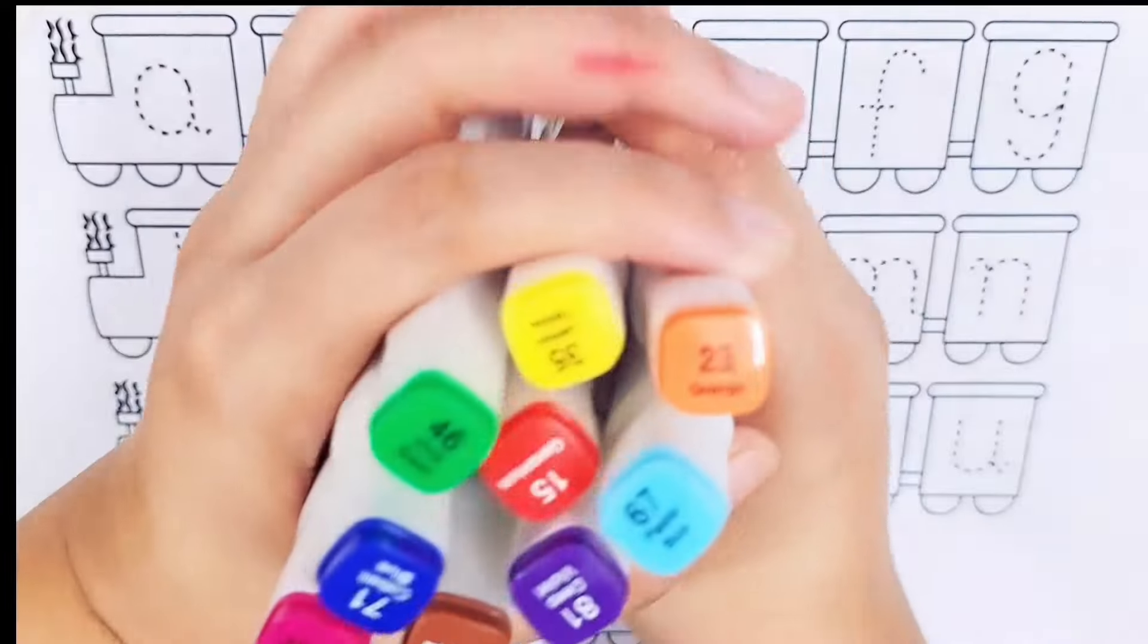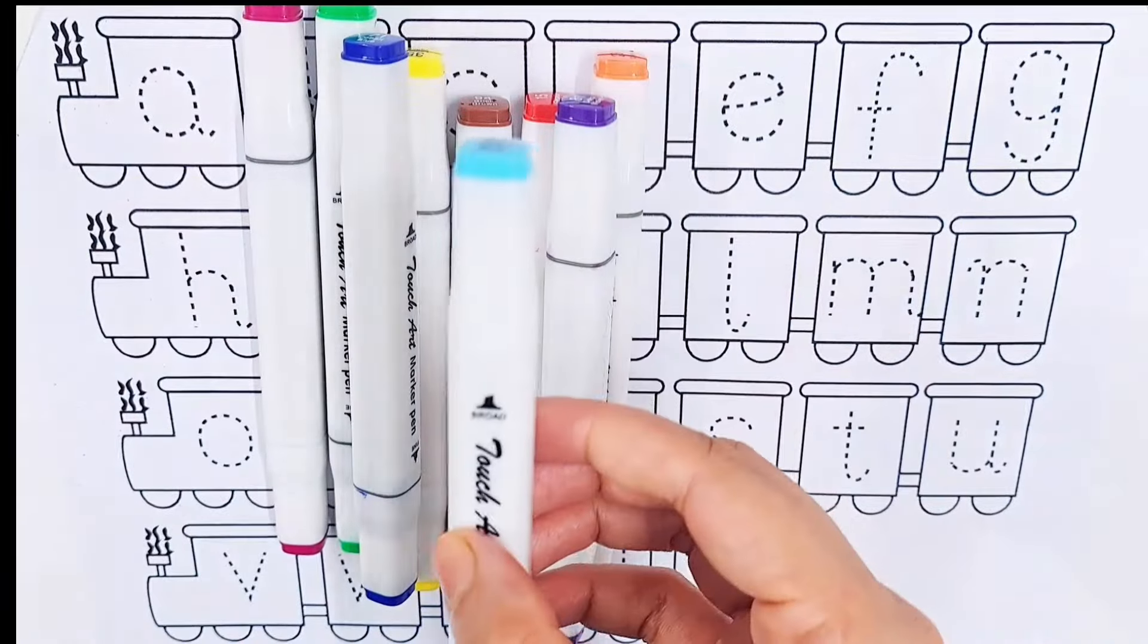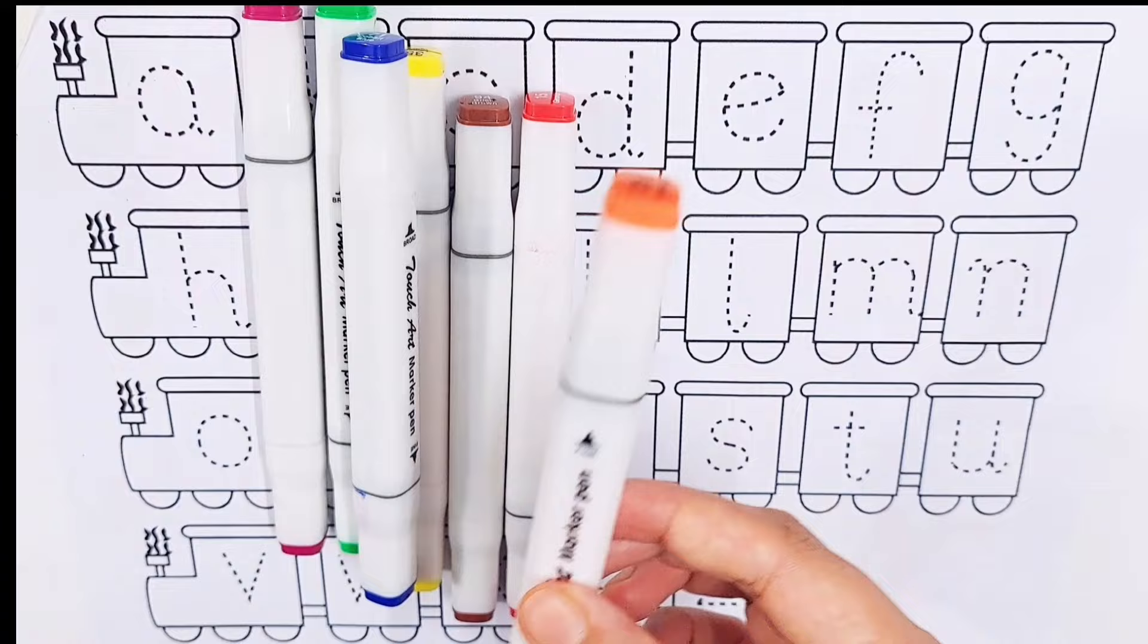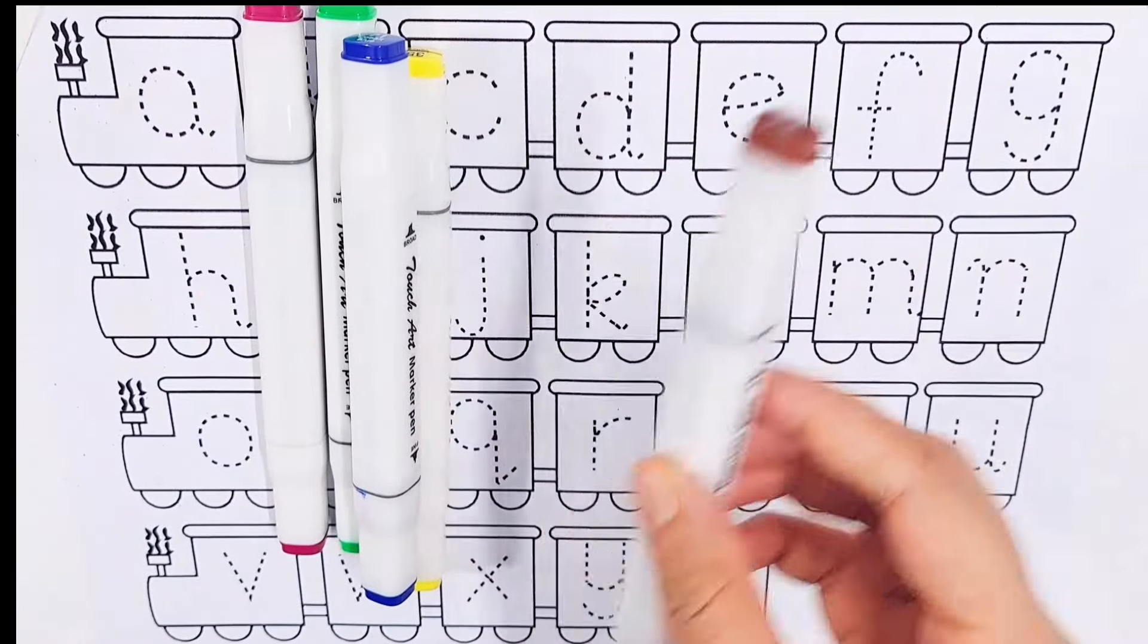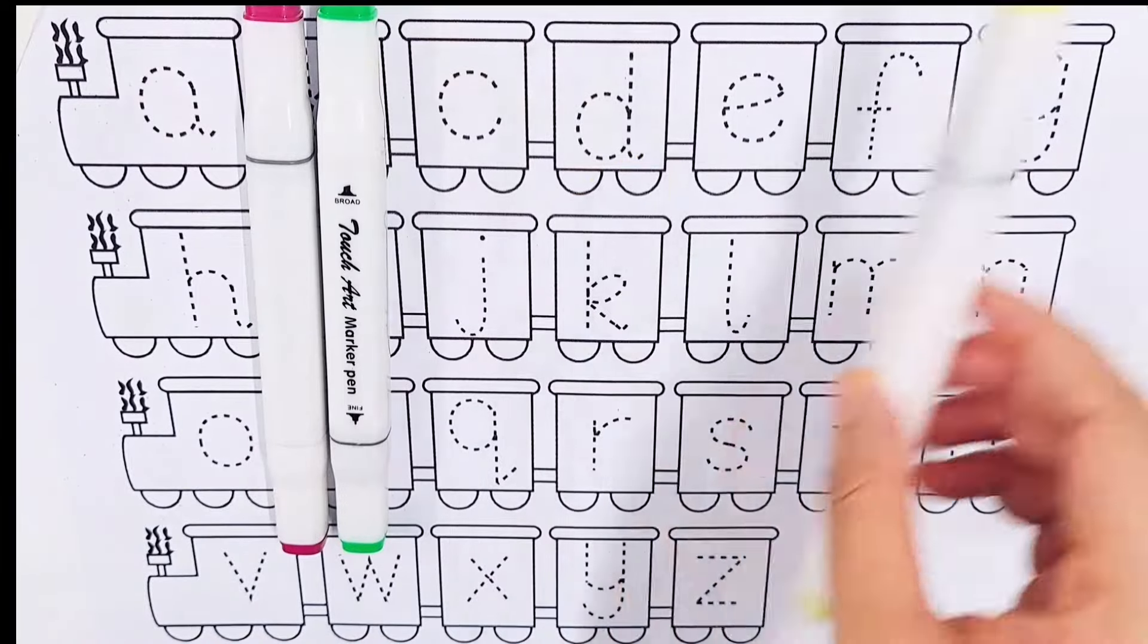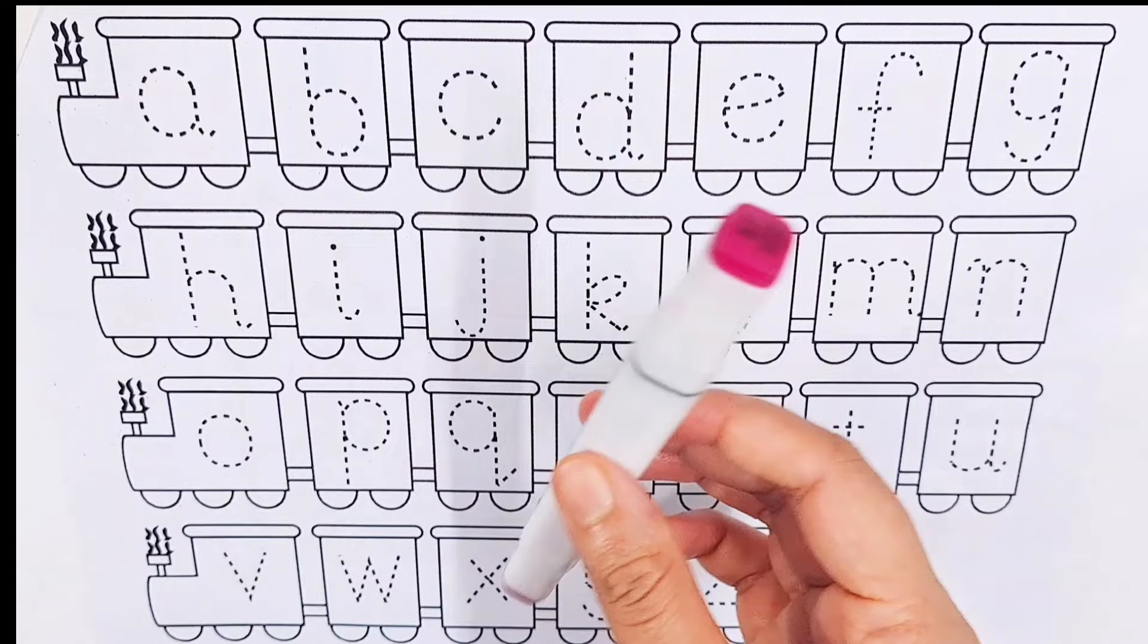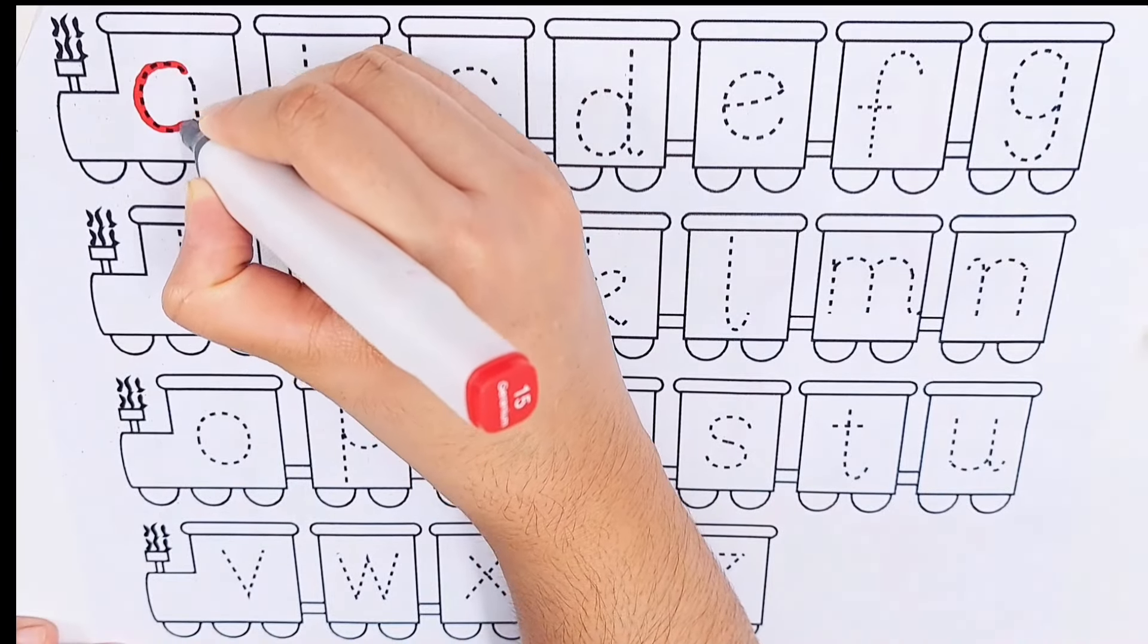Hello guys, let's learn some colors name. Sky blue color, violet color, orange color, red color, brown color, dark blue color, yellow color, light green color, purple color, yellow color.